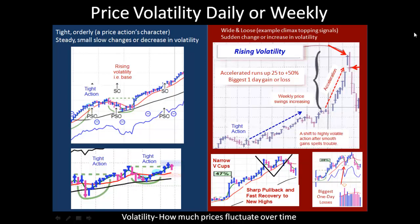Weak price action would be wide and loose — big swinging price changes. Here you have some nice tight action making a lovely run up, then the price starts to fluctuate and the weekly price range starts to expand. Now suddenly you have this acceleration — notice the slope, nice and steady and then almost parabolic. When you shift from low volatility and tight price action to high volatility and an acceleration in the move up, that's a yellow flag. You need to exercise caution. Those are two things that are often associated with a climax run.